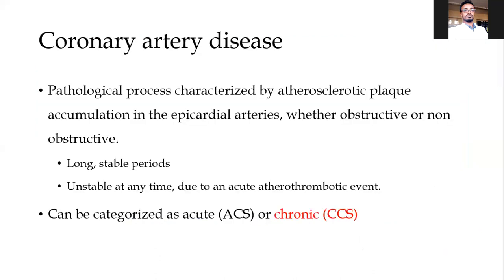To start with the definition, coronary disease is a pathological process characterized by atherosclerotic accumulation in epicardial arteries, whether obstructive or non-obstructive, and it can have different variable clinical features. It can be a long-standing stable period, or it can be unstable at any time due to an acute atherothrombotic event. Although it can be stable over a long period, it's a dynamic process.